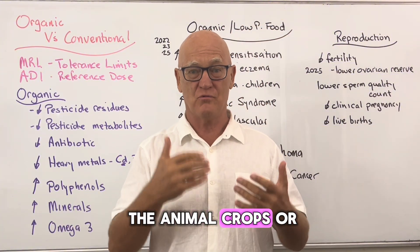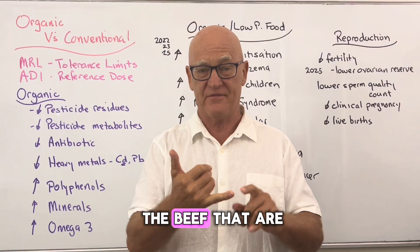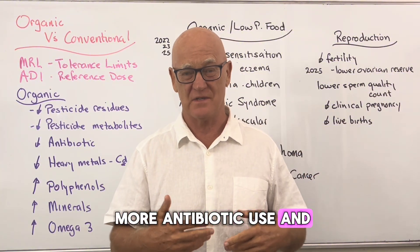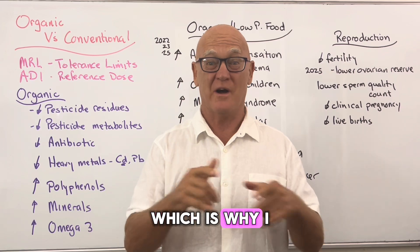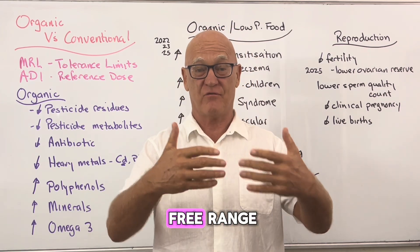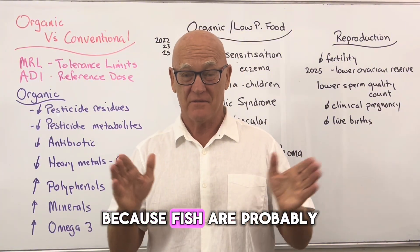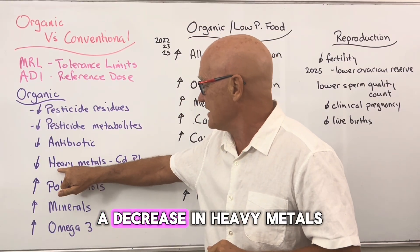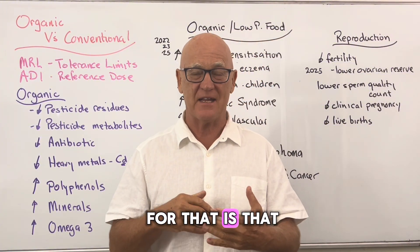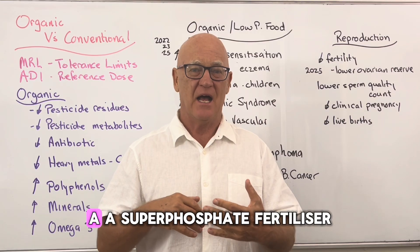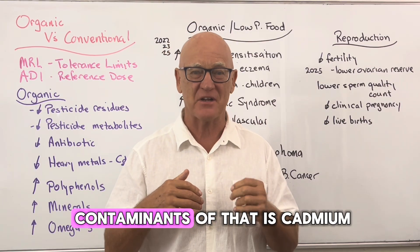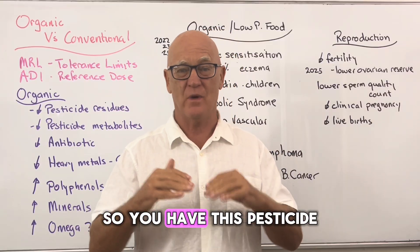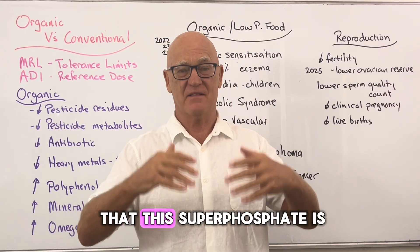Antibiotics are lower in animal products from organic farming. Animals like beef concentrated in tight spaces — 10,000 in a very small area — have far more antibiotic and pesticide use, which is why I avoid wagyu beef and choose free-range. Fish are probably the worst, concentrated in small areas and given antibiotics. There's also a decrease in heavy metals, particularly cadmium, because conventional agriculture uses superphosphate fertilizer which is contaminated with cadmium — and the more it's used, the more it builds up in the food.